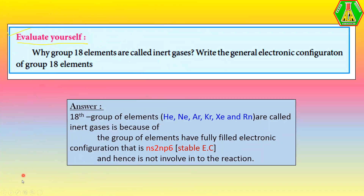Why are group 18 elements called inert gases? The general electronic configuration of group 18 elements is ns²np⁶. This fully filled electronic configuration is a stable electronic configuration, and hence such elements are not involved in chemical reactions. The group includes helium, neon, argon, krypton, xenon, and radon.